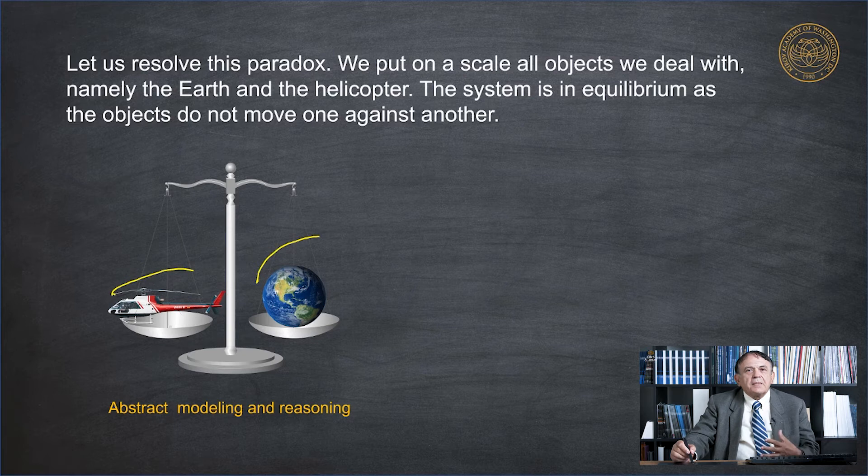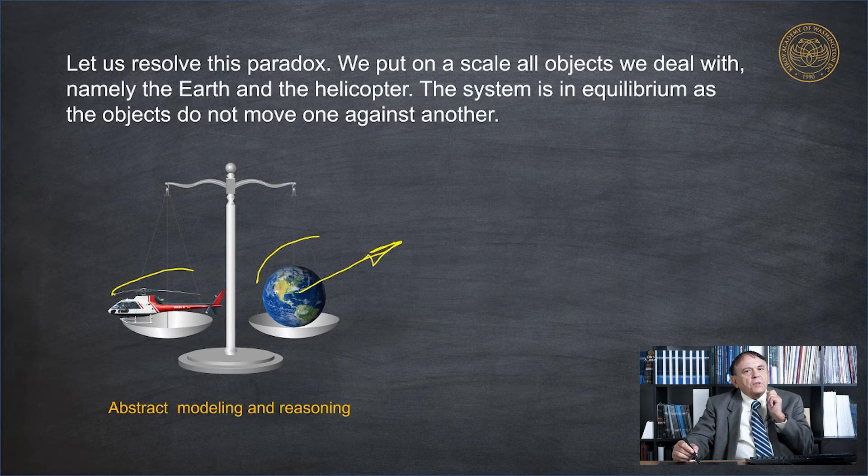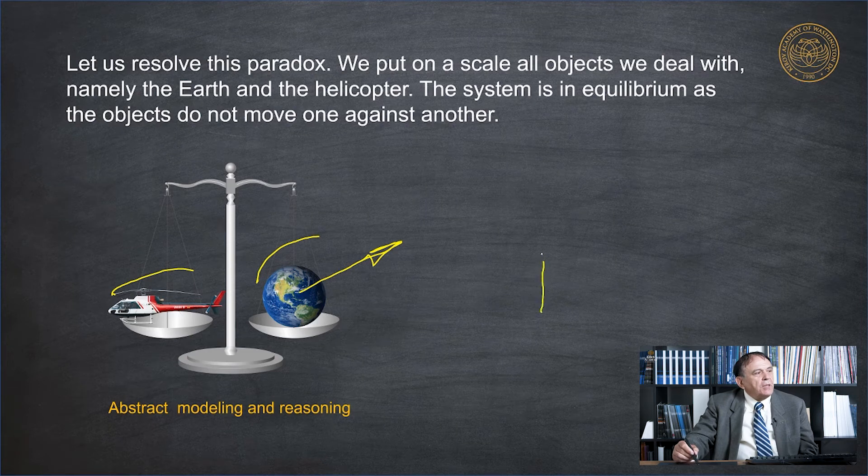So let us build this abstract model, which is a scale. And this is an equilibrium. This is earth and the helicopter. So what we should, how we should reason here. We have two systems. And if we would like to analyze what happens with helicopter, we have to remove the earth from here.